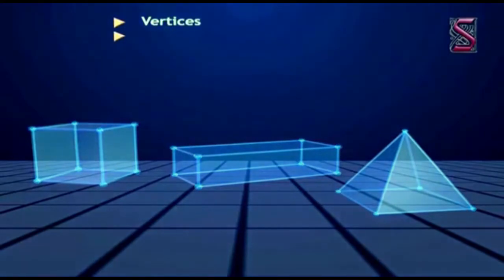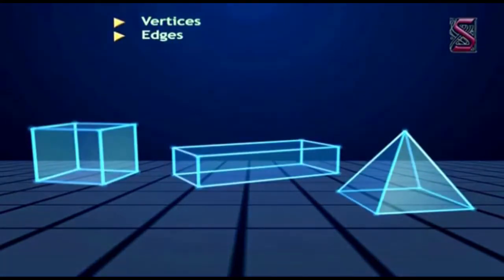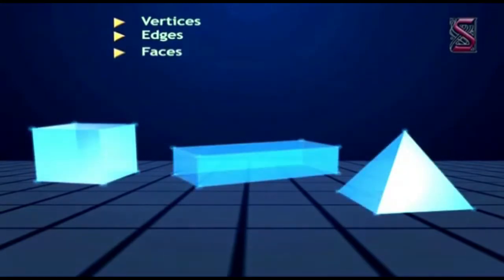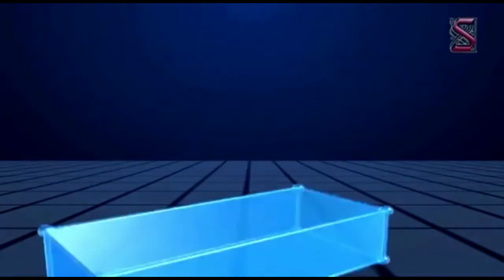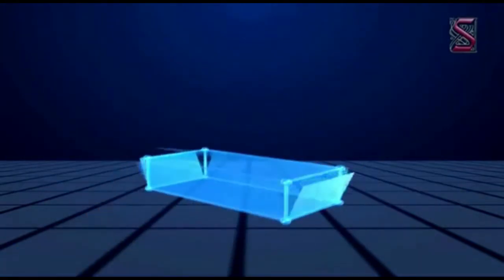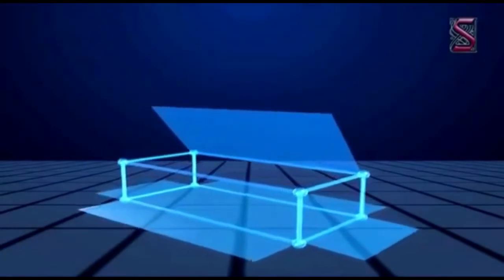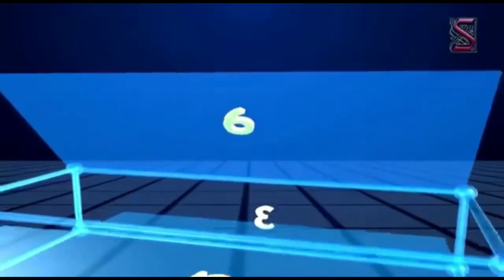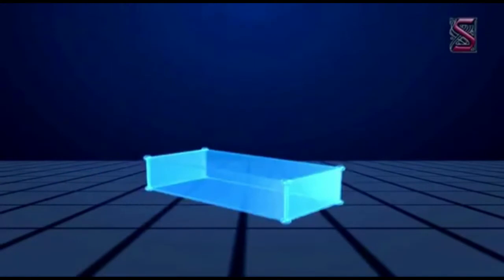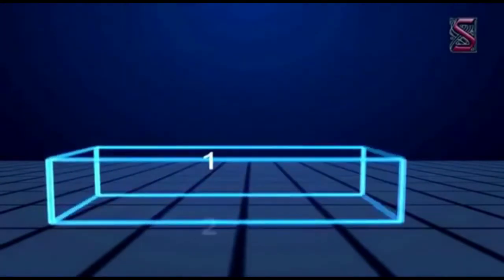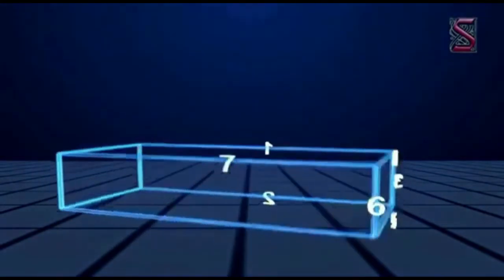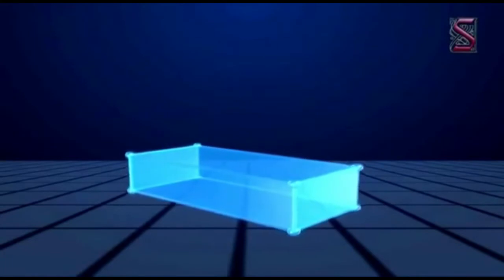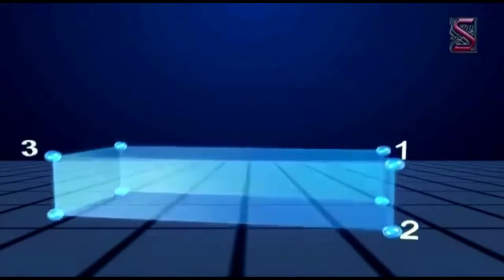A cuboid has six rectangular faces, twelve edges, and eight vertices.